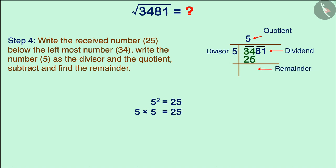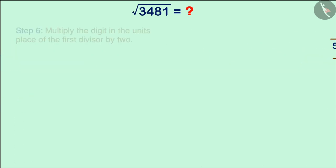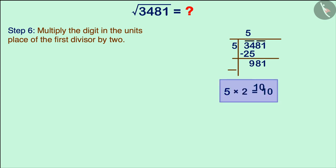To find the remainder, we will subtract both the numbers. Here 9 is the remainder. Now write the number of the next pair after the remainder. This gives us a new composite number 981. Now leave a blank space for the units place of the new divisor and multiply the digit in the units place of the first divisor by 2. After this, write the product in front of the blank in this way.